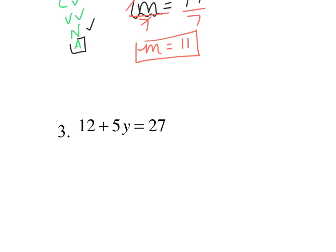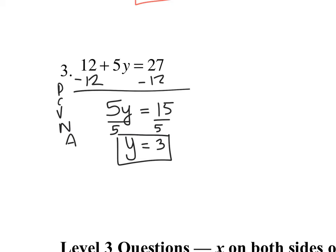For 12 plus 5y equals 27, try to do this one by yourself. You should subtract your 12 first. When you subtract your 12, your 12s are going to cancel, and then you get 27 minus 12. 27 minus 12 is 15. I now have 5y that I'm multiplying, so I divide both sides by 5. My 5s cancel, and I get y equals 3. That's your final answer.